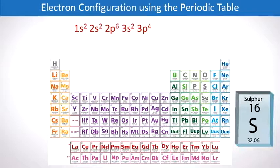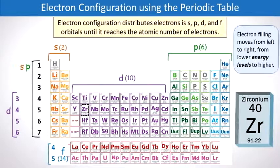And if we clean it up, we have electron configuration of sulfur shown here. What about zirconium?